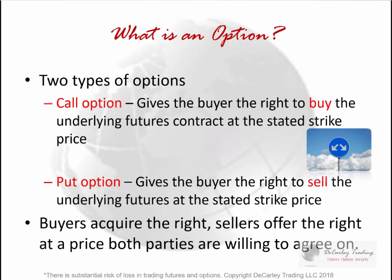There are basically two types of options: calls and puts. A call option gives the buyer the right to buy the underlying futures contract at the stated strike price. A put option gives the buyer the right to sell the underlying futures contract at the stated strike price. Buyers are acquiring the right; sellers are offering that right at an agreed price. A lot of people make the mistake of assuming their profit and loss is simply based on where the futures market is relative to their strike price — that's not necessarily true.